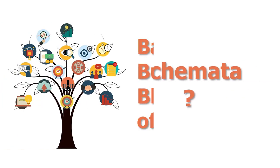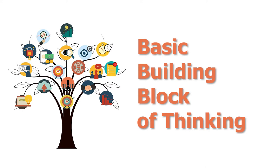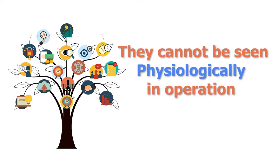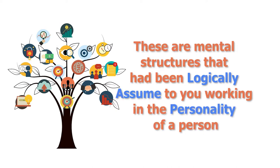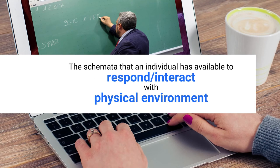What are schemata? They are the basic building blocks of thinking. They cannot be dissected or seen physiologically in operation. These are mental structures that have been logically assumed to be working in the personality of a person. The schemata — what cognitive structure is available with a person to respond — is very important. If the person doesn't have that cognitive structure, the person won't be able to respond, and hence there will be no interaction either. So responding and interaction are feasible if and only if we have cognitive structure pertaining to that event.